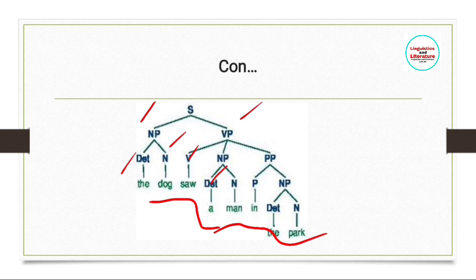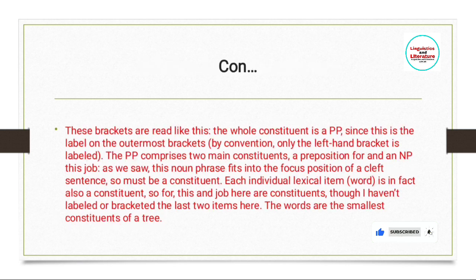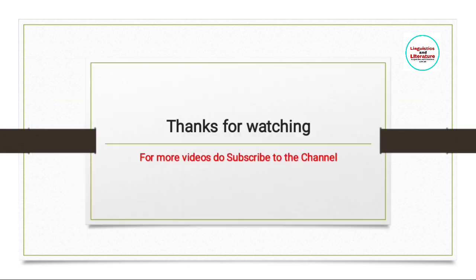Relationships within the tree involve labels for word phrases, verb phrases, prepositional phrases, and noun phrases. These are represented with labeled brackets in tree diagrams. That was all for today's video. I hope this video has been helpful. Thanks for watching — if you liked this video and it sparked your interest, please like, share, and comment. Take care of yourself.